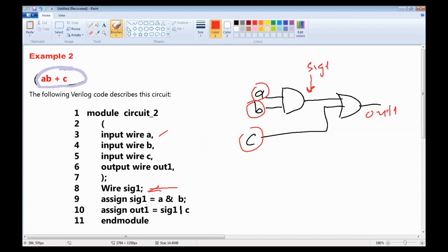And SIG1 is assigned A and B. And the output is assigned SIG1 or C, where this is the operator for OR operation. As you see in line 8, an internal signal is defined. The keyword wire is used to specify the data type of this connection. The wire data type would translate to a physical wire in the design.